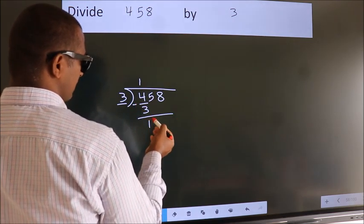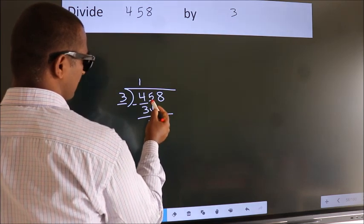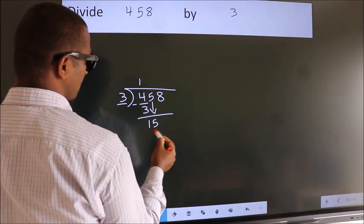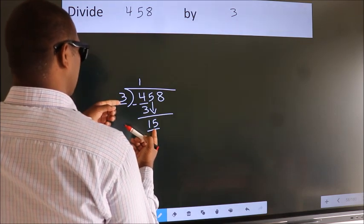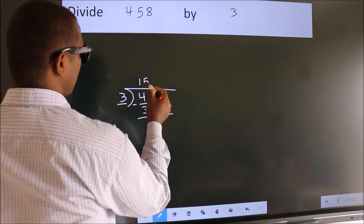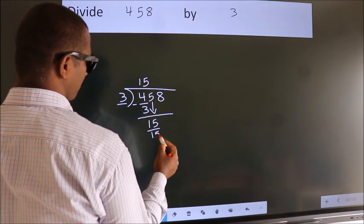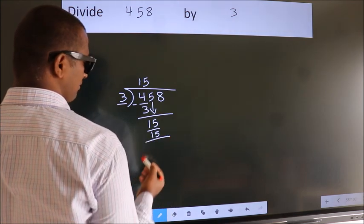After this, bring down the beside number. So 5 down. So 15. When do we get 15? In 3 table. 3 fives, 15. Now we subtract. We get 0.